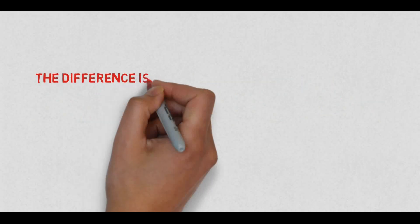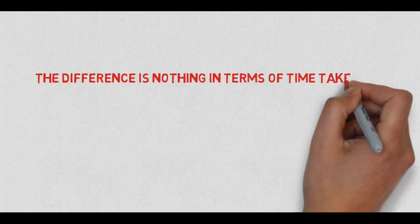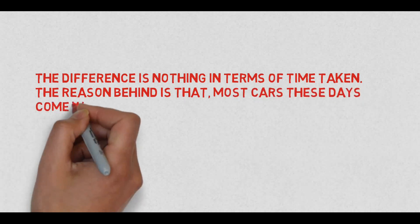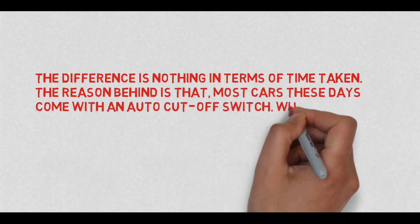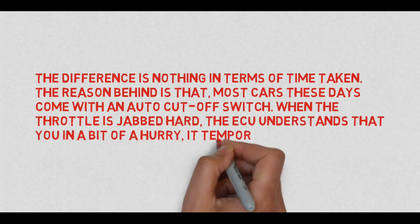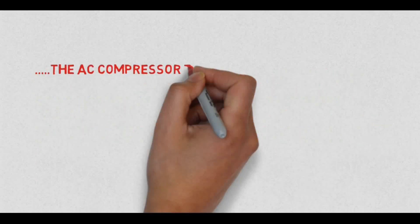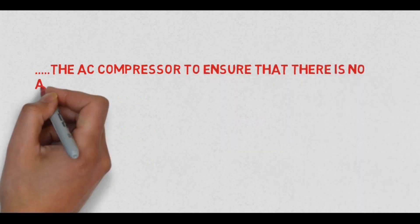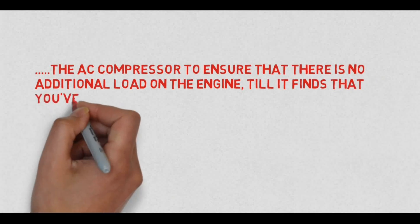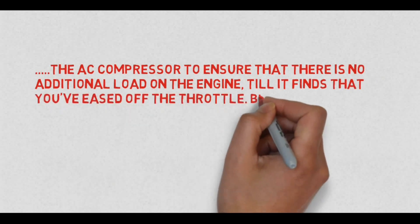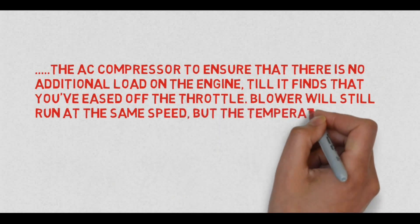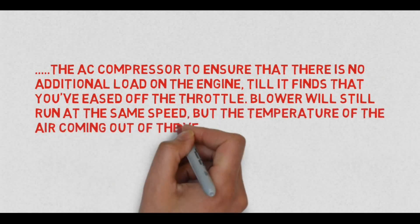The difference is nothing in terms of time taken. The reason behind this is that most cars these days come with an auto-cut-off switch. When the throttle is jabbed hard, the ECU understands that you are in a bit of a hurry. It temporarily shuts off the AC compressor to ensure that there is no additional load on the engine, till it finds that you've eased off the throttle. The blower will still run at the same speed, but the temperature of the air coming out of the vent won't be the same during this time.